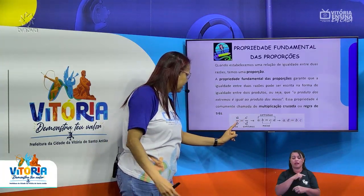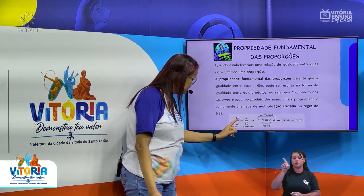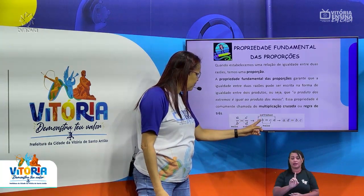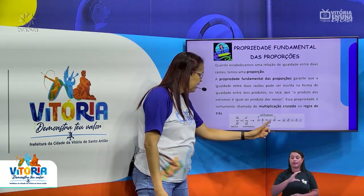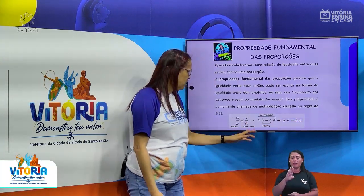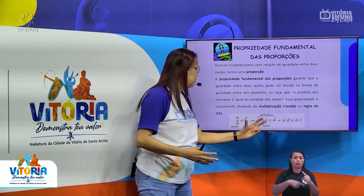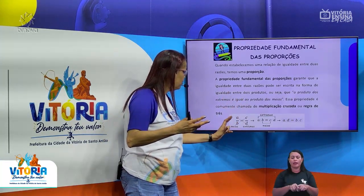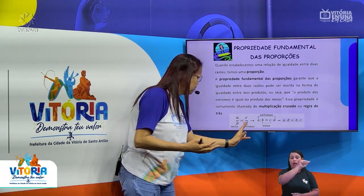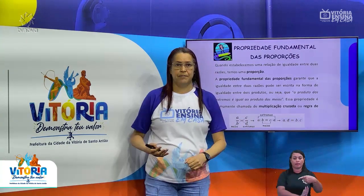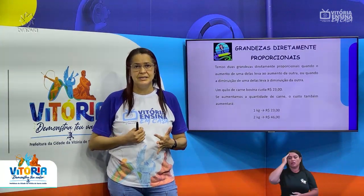Na proporção A está para B assim como C está para D: B e C são os meios, e A e D são os extremos. Porque em A dividido por B, A é o extremo; em C dividido por D, D é o extremo; e B e C são os meios. Portanto, A vezes D é igual a B vezes C. Ou seja, dentro da proporção, a divisão se transforma num produto entre esses números — o produto dos extremos A×D é igual ao produto dos meios B×C. Entender esse processo facilita muito o cálculo para grandezas diretamente proporcionais.